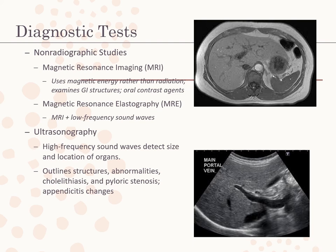Ultrasonography uses high-frequency sound waves directed through the body that bounce off structures such as the liver and pancreas. The returning sound waves are interpreted and recorded electronically. Ultrasonography shows the size and location of organs and abnormalities, helping detect cholecystitis, cholelithiasis, pyloric stenosis, biliary system disorders, and changes caused by appendicitis. Although the client can drink water before ultrasonography, drinking through a straw, smoking, or chewing gum should be discouraged because swallowing air distorts sound wave transmission. Endoscopic ultrasonography uses a fiber optic scope with a high-frequency ultrasonic transducer for direct images along the GI tract, providing higher resolution images helpful in staging tumors and evaluating intestinal wall changes.